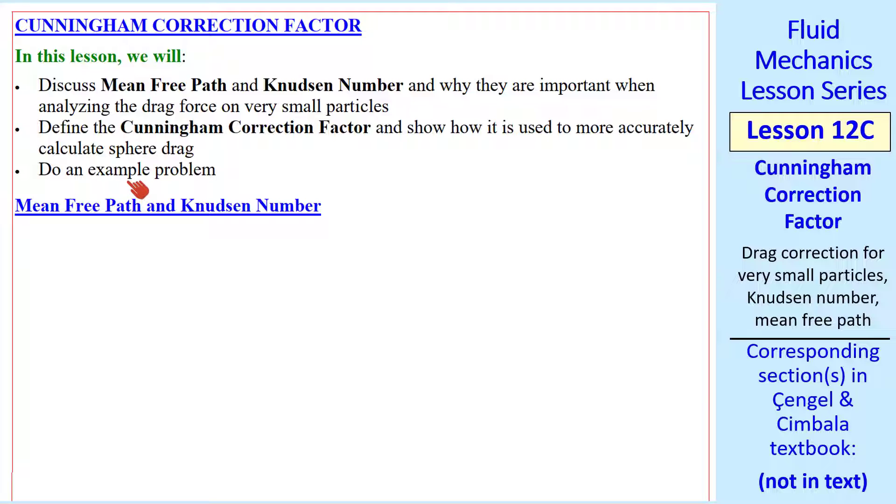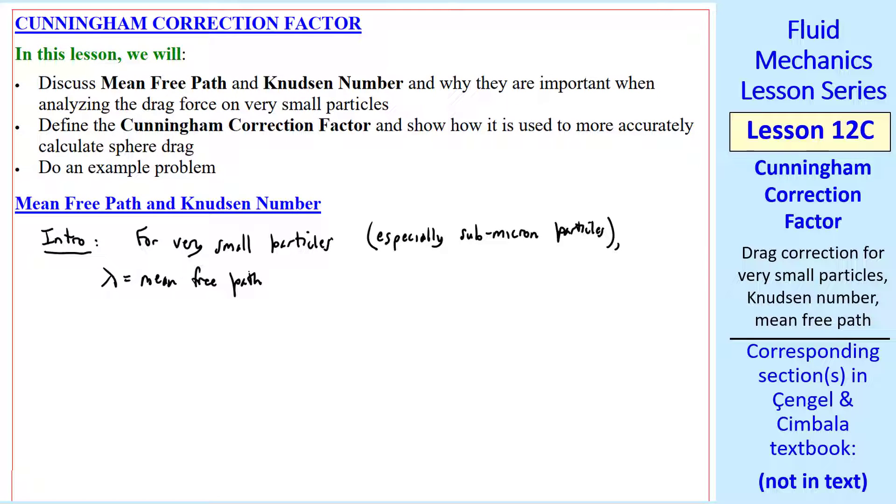I'll also do an example problem. By way of introduction, for very small particles, especially submicron particles, as we often encounter in air pollution problems, the mean free path lambda of the air is important. Why?